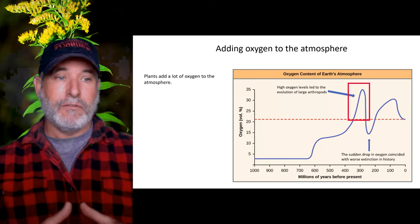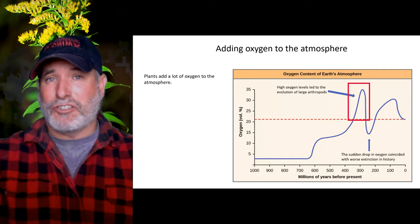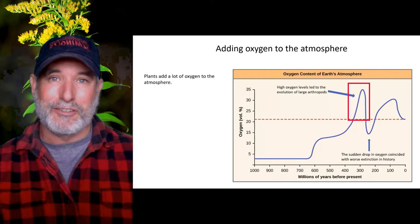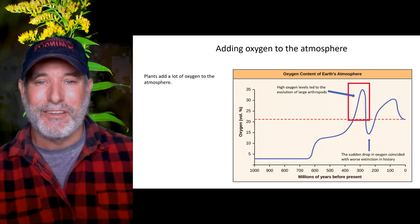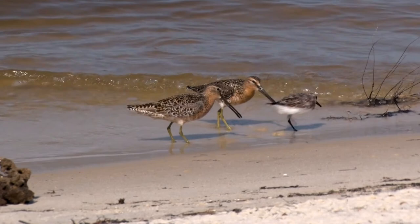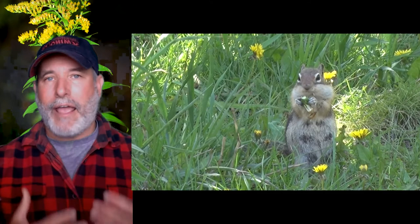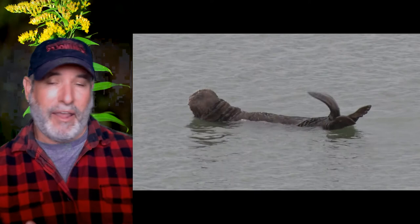That ramp-up in oxygen is the colonization of land — the greening of the Earth. Photosynthesis is no longer just taking place in the oceans; it's taking place on land, and there's a lot of room on land for plants to grow. We get our first forests, and oxygen levels peaked around 300 million years ago at almost 35% of our atmosphere. Oxygen energizes life — it makes life very efficient at extracting energy from organic molecules. As a result, animals evolved: large, complex organisms with very active lifestyles, needing lots of energy. Oxygen made multicellular life and animals possible.